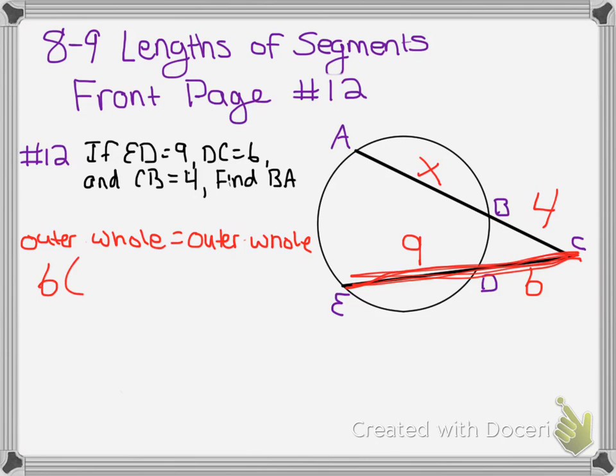So 6 times 15 equals, for the other secant, that would be the outer is 4. And the whole length, while we don't have a number for it, we know that it is the outer and the inner added together. So that is 4 plus X.